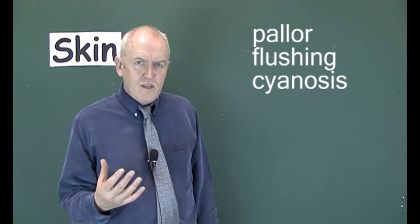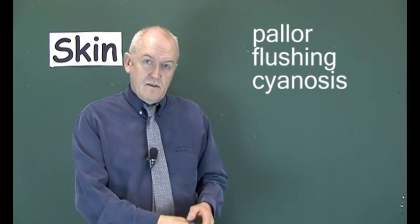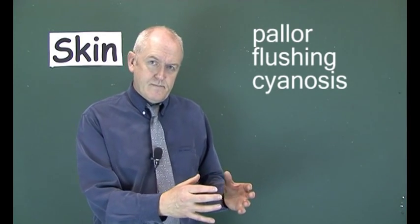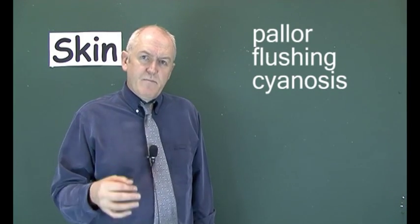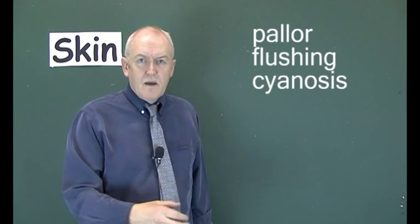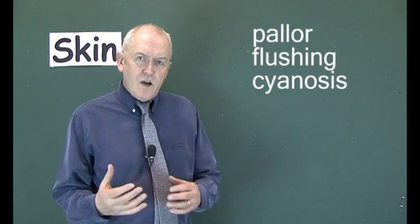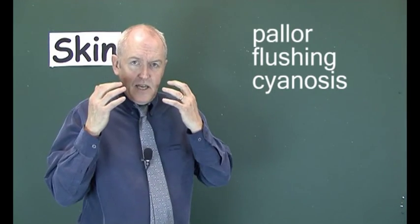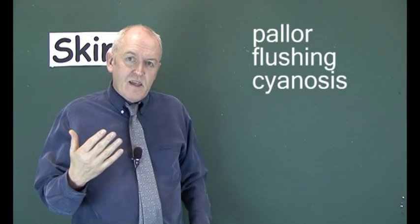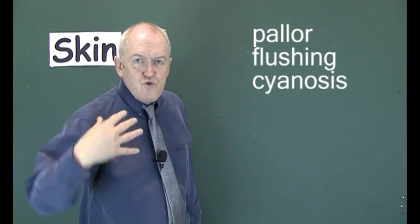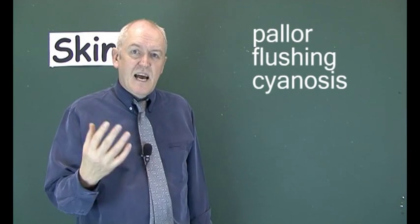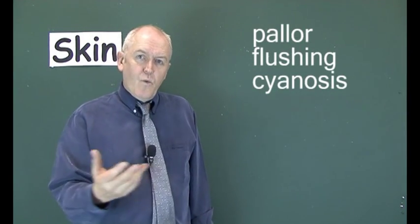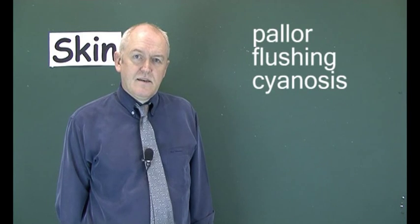Why do we see cyanosis as a blue colour? Oxyhaemoglobin in systemic arteries is bright red, while deoxyhaemoglobin as in venous blood is dark red. In cyanosis, the blood is becoming dark red as it deoxygenates. We are not seeing the blood directly — we see the dark red colour through the patient's lips, tongue, or skin. The combination of dark red colour viewed through skin or lips causes the human eye to perceive it as blue.